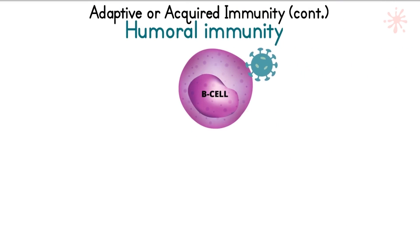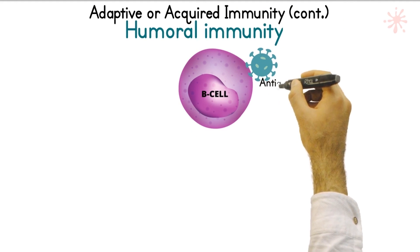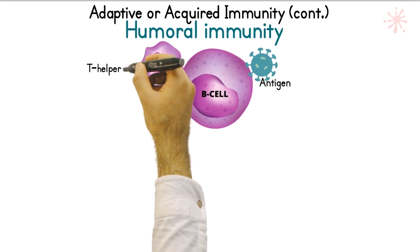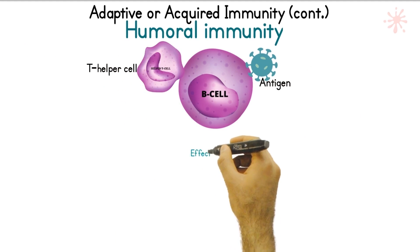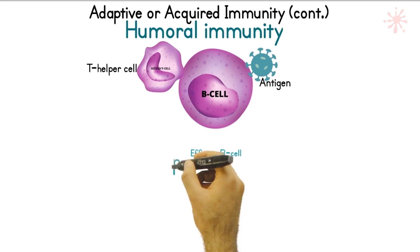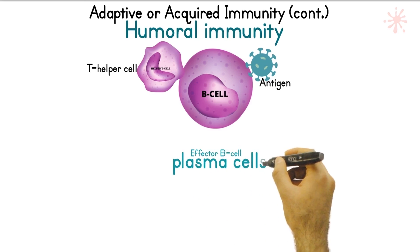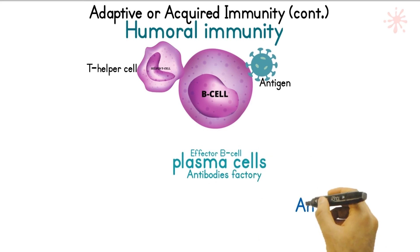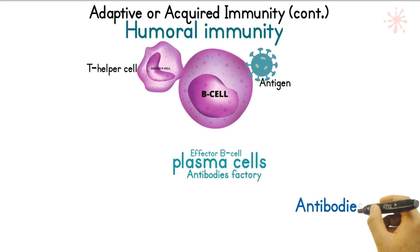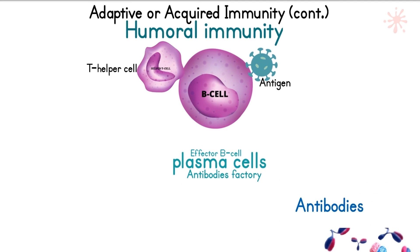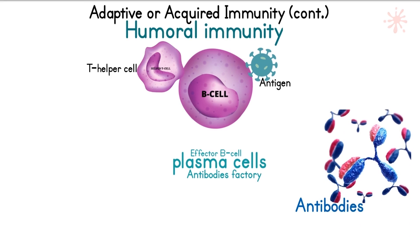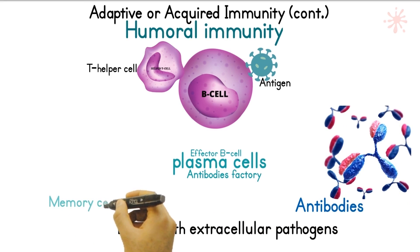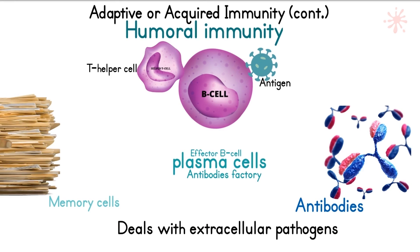B cells are the main component of the humoral response. To activate a naive B cell, it needs to bind to an antigen — the protein found on the microbe's surface — and it requires an activated T helper cell to bind to that same B cell before it gets activated and produces effector B cells. These cells are also called plasma cells, known as antibody factories, and they produce antibodies to kill pathogens. This is why the system is also called antibody-mediated immunity.